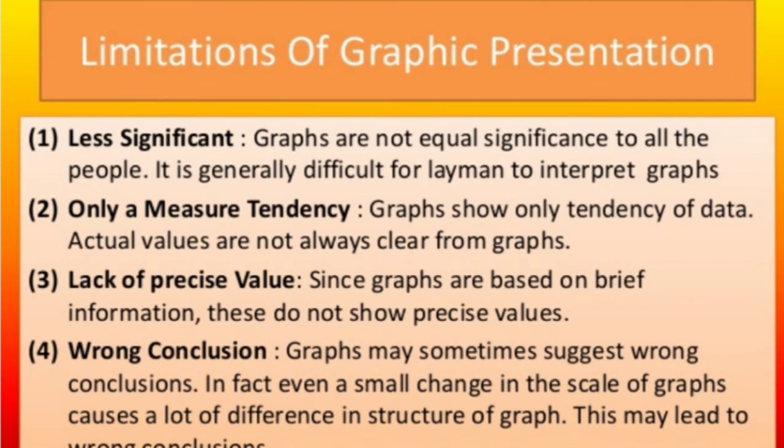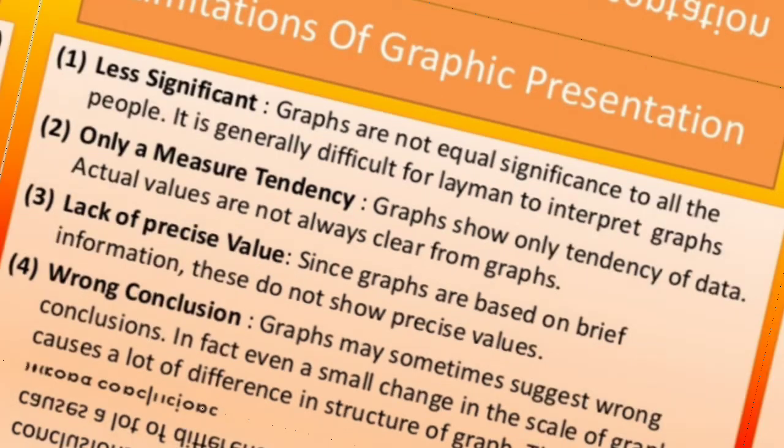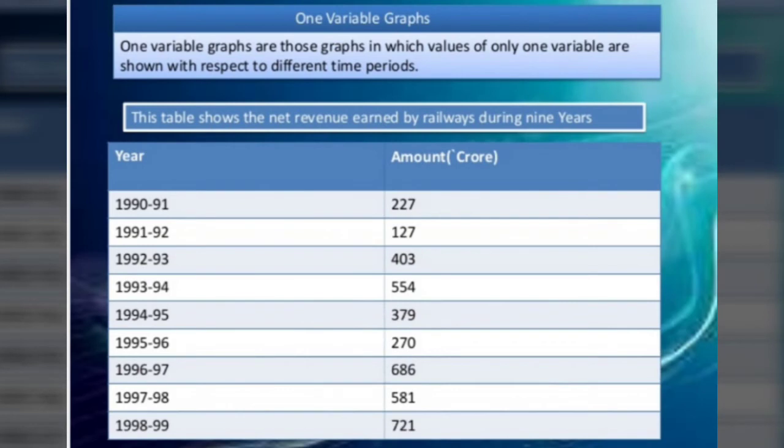Only a major tendency. Graphs show only tendency of data, actual values are not always clear. Lack of precise value based on brief information, and the wrong conclusion. A small figure change may result in different interpretations of the graphs.